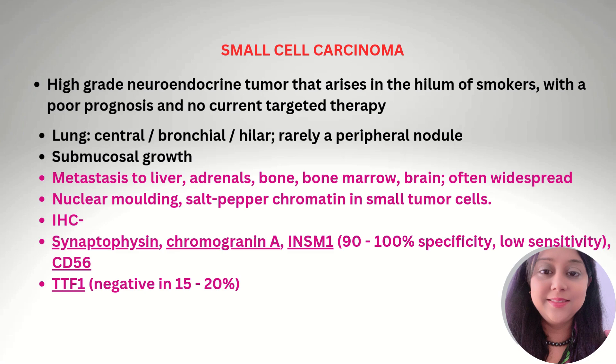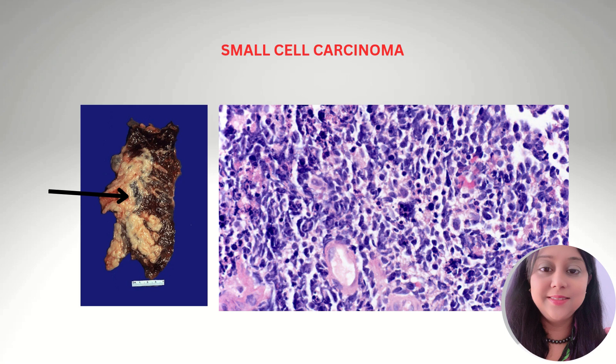Immunohistochemically, synaptophysin, chromogranin A, and CD56 are positive, and TTF1 is negative in 15 to 20% of cases. The gross image and micrograph of small cell carcinoma show small neoplastic cells with nuclear molding and crushing artifact.